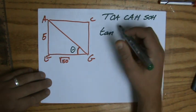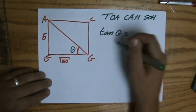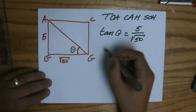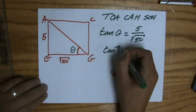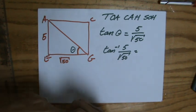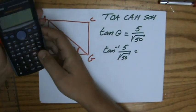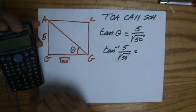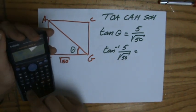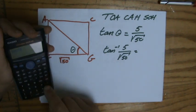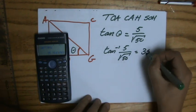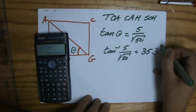And then to find the angle, I have to do the inverse function. So, shift tan. And I'm going, again, a little bit quick. Because I've done this so many times now with you. 5 divided by the square root of 50. Make sure you're able to use your calculator. And I'm doing shift tan of that answer equals. And angles we give correct to one decimal place. 35.3 degrees.